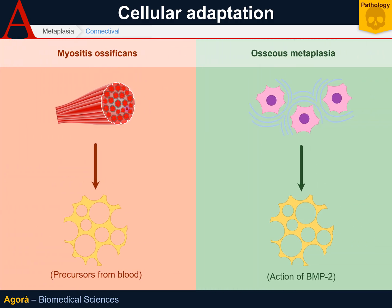On the other hand, osseous metaplasia is a phenomenon of bone formation within the scar tissue during scarring. This condition seems to be mediated by bone morphogenic protein 2 and to occur with particularly high levels of calcium, but the available data are too few.